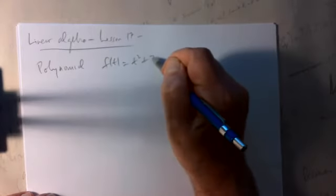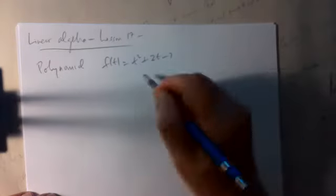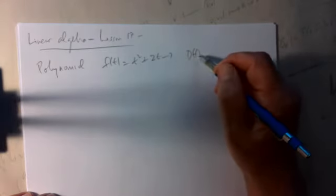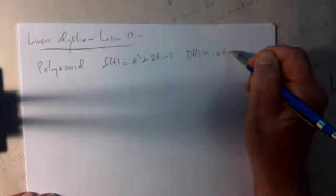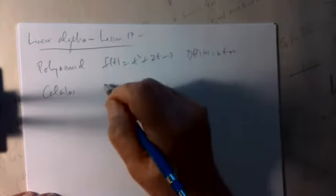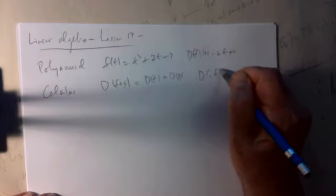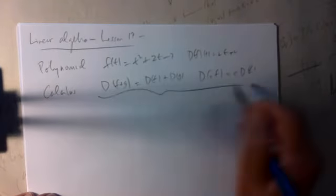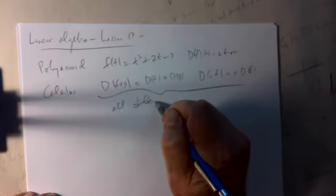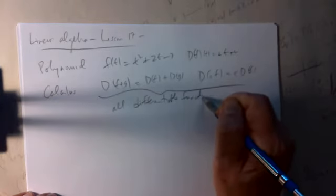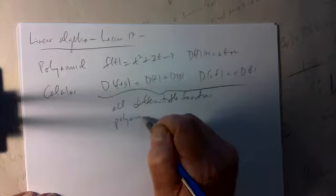We're talking about linear transformations, and this is just a problem from beginning calculus. You know what a polynomial is — f(x) = t² + 2t − 7 is a polynomial. In calculus you learn how to differentiate it, so the derivative of t² + 2t − 7 is 2t + 2. You also learn that the derivative of the sum of two functions is the sum of the derivatives, and the derivative of a constant times a function is the constant times the derivative. This is true for all differentiable functions, and polynomials are certainly differentiable.